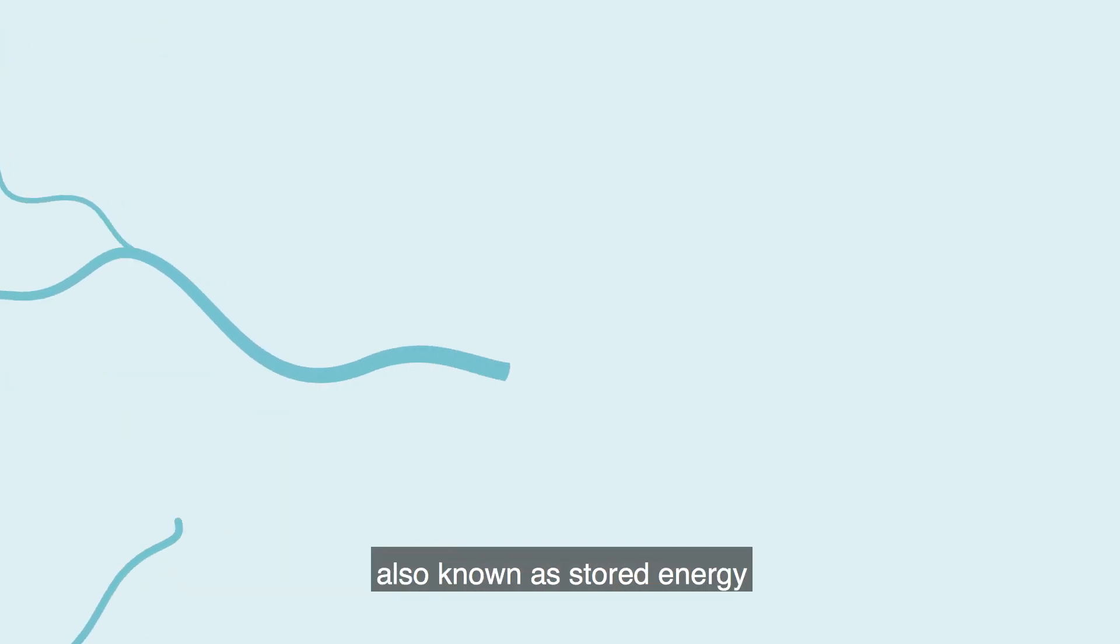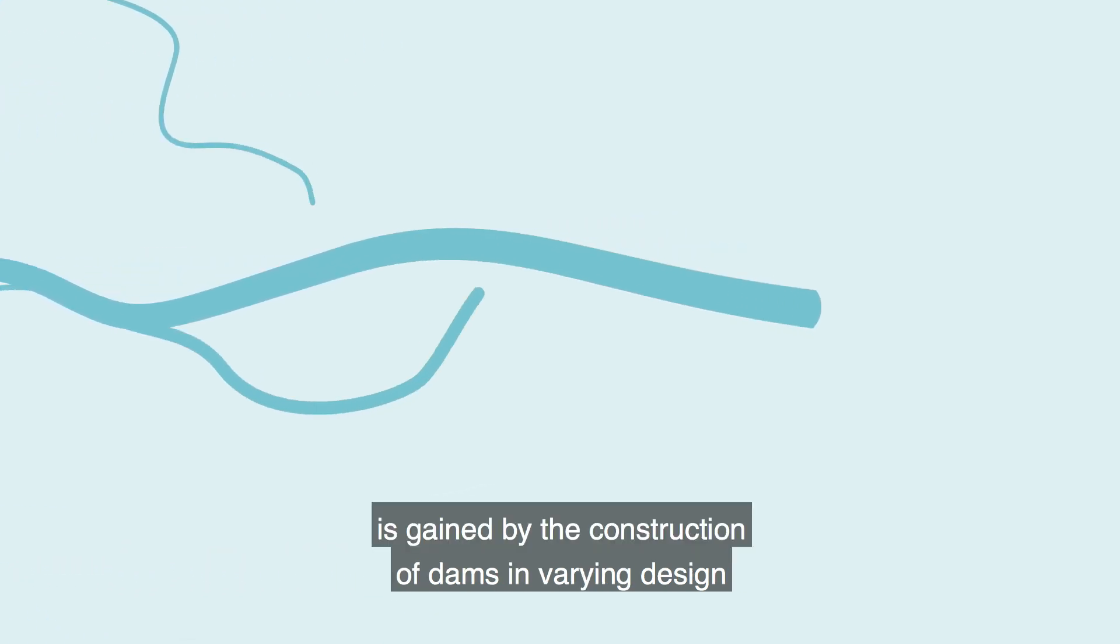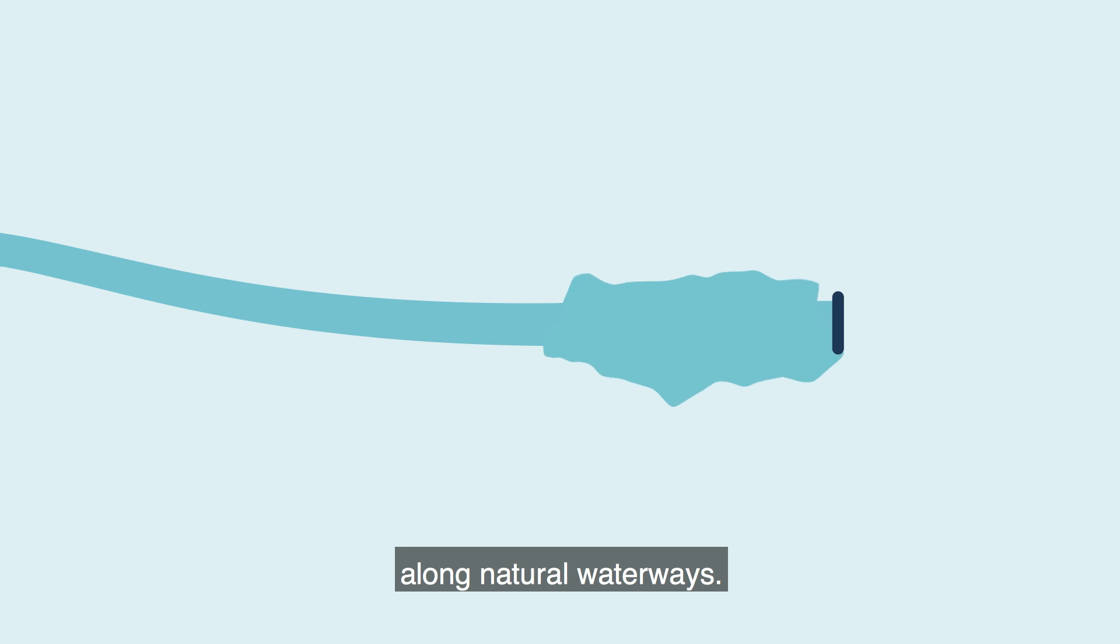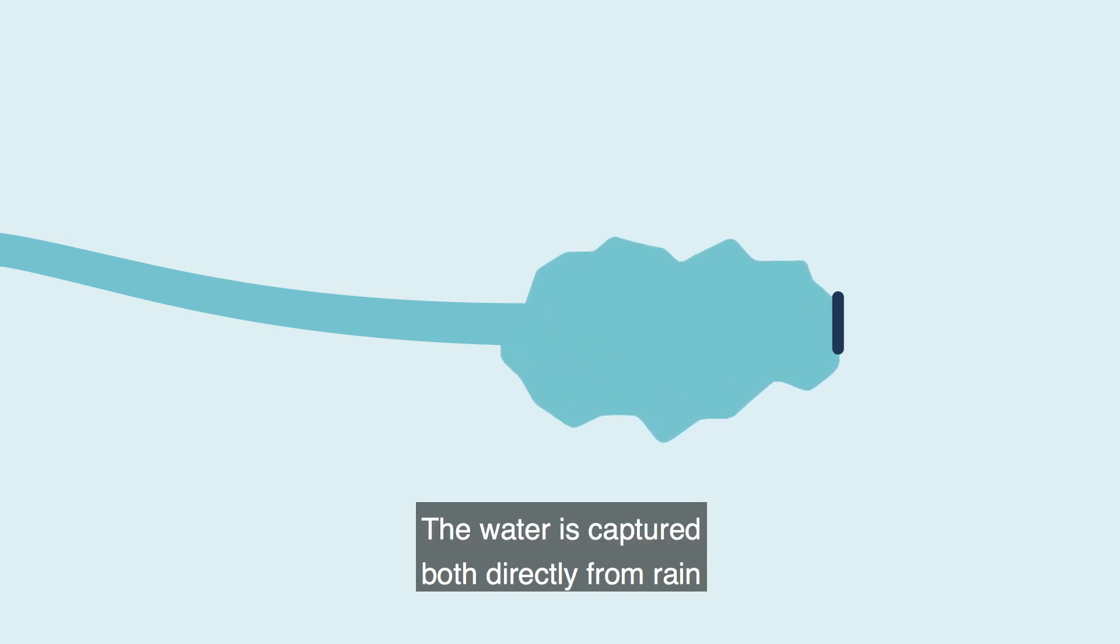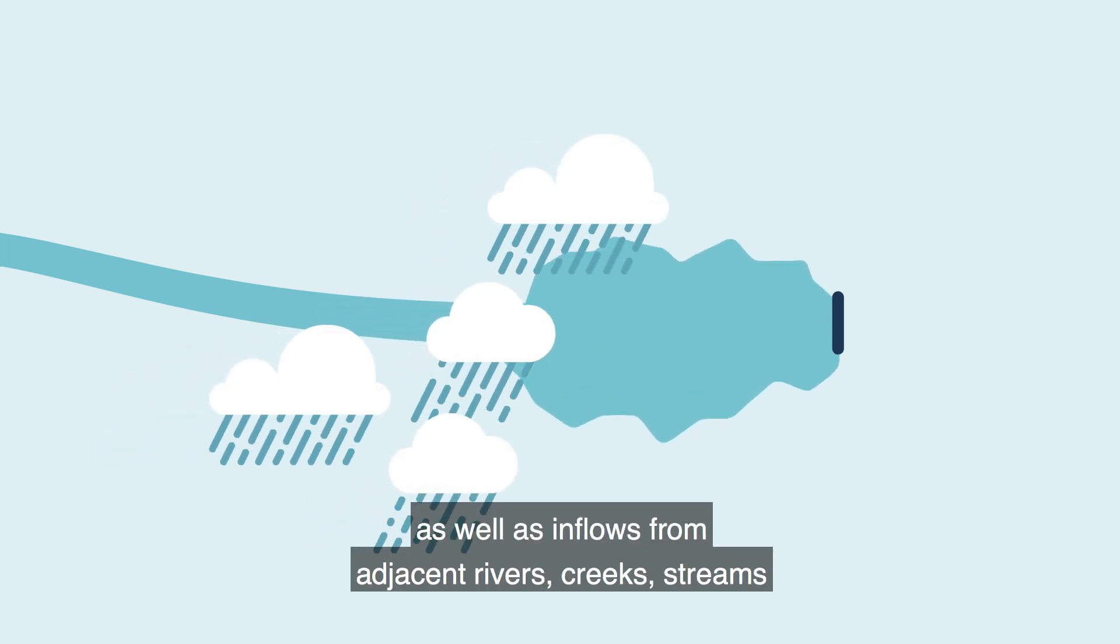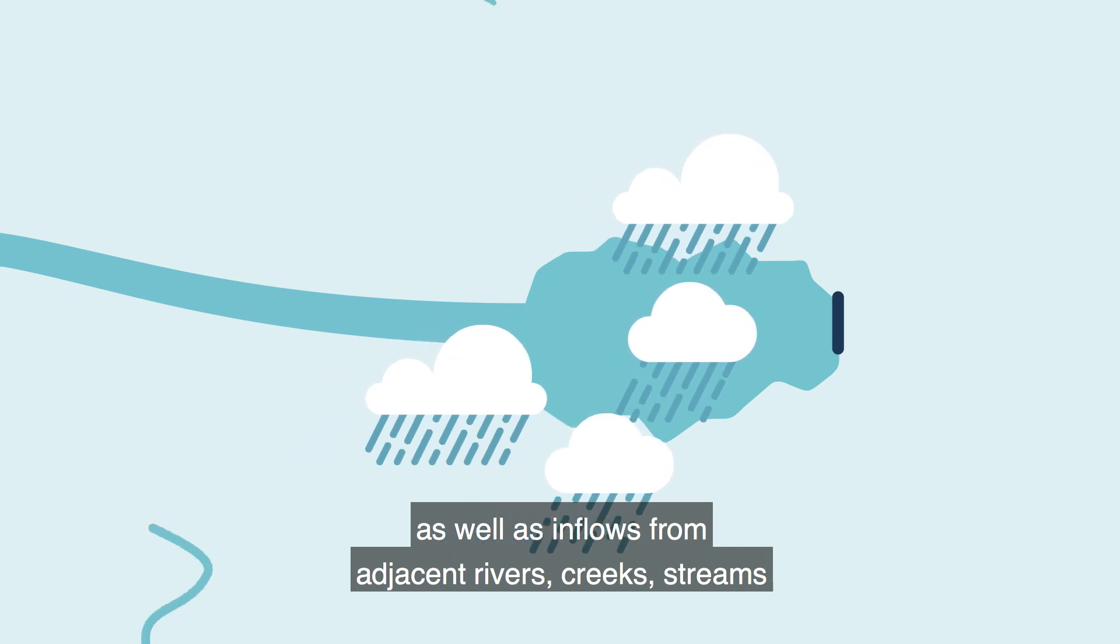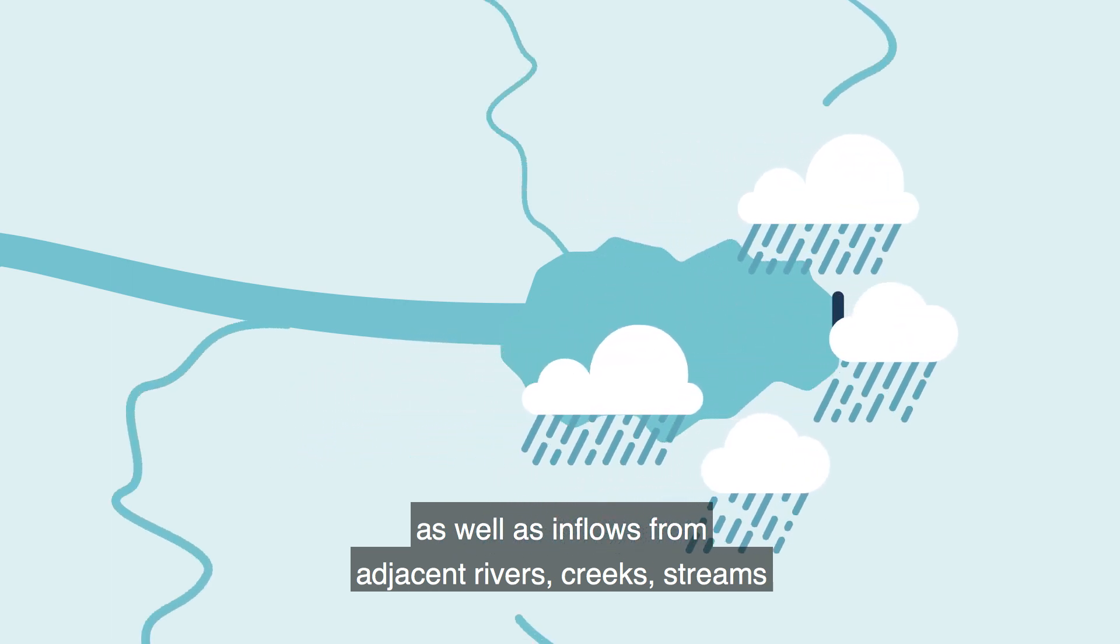Potential energy, also known as stored energy, is gained by the construction of dams in varying design along natural waterways. The water is captured both directly from rain, as well as inflows from adjacent rivers, creeks, streams and melting snow.